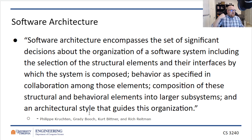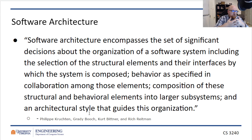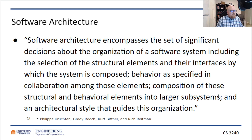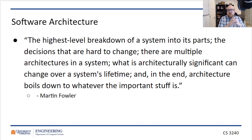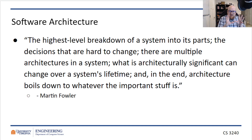It's the selection of structural elements and their interfaces by which the system is composed. It is behavior as specified in collaboration among these elements — that is, how do these systems interact with each other? And the composition is the building of these structural and behavioral elements into larger subsystems. More broadly, it's the highest level breakdown of a system into its parts — the decisions that are very hard to change, because we're talking about how the system is going to be laid out at the root design level. We're talking about the broad organization of the system.